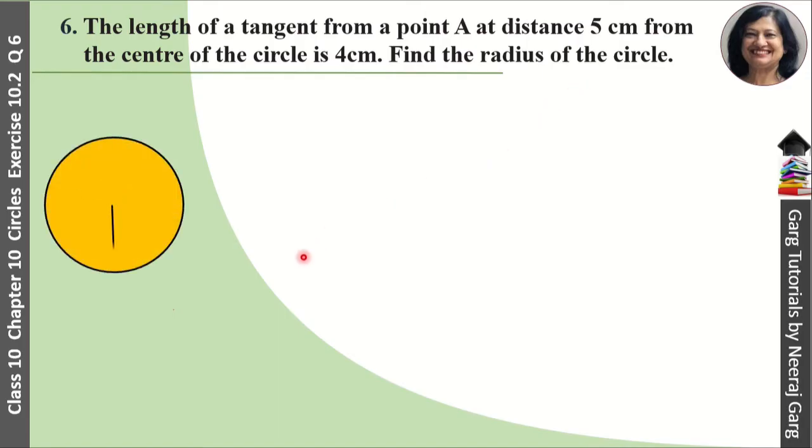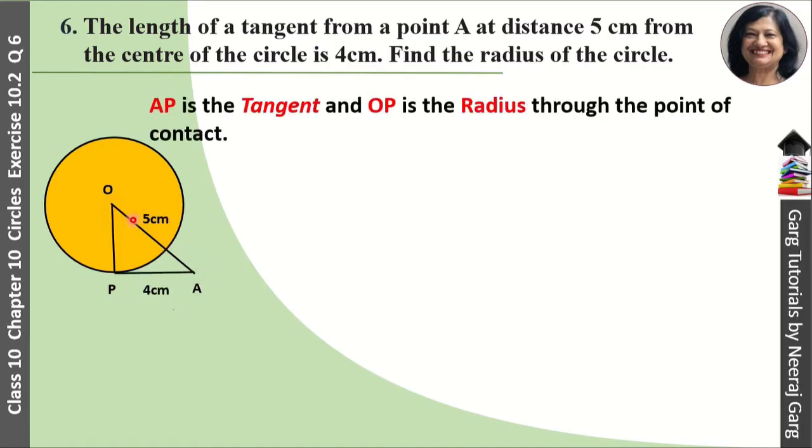Hamei ek circle given hai aur yahaan par ye ek A point hai joki center se 5 cm ke distance per hai means OA is equal to 5 cm. OP ek radius hai aur is A se ek tangent draw ki gahi hai AP jiski length haamei given hai 4 cm. Aur humein radius nikal na hai OP humein find karna hai.